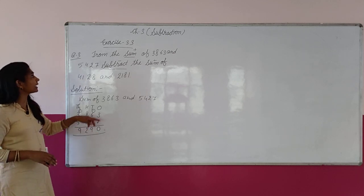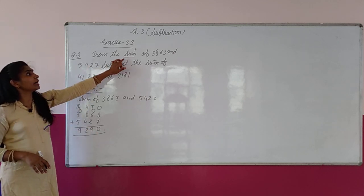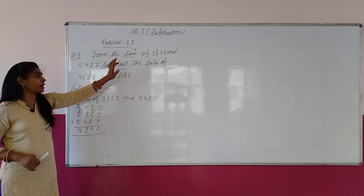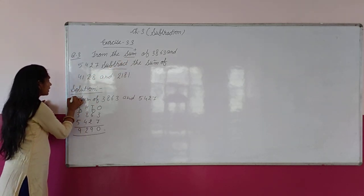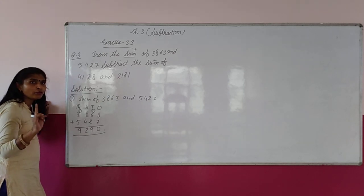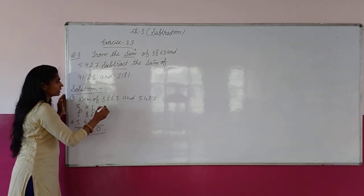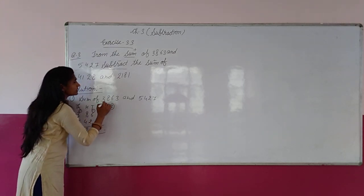9,290. इन two numbers का sum 9,290 आया. अब आगे हमें क्या करना है? यह है हमारा first work. अब हम second work करेंगे.